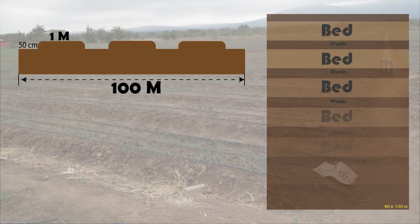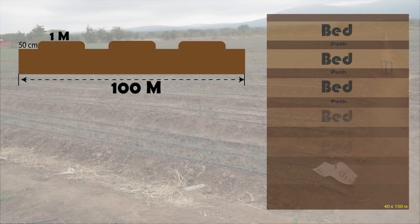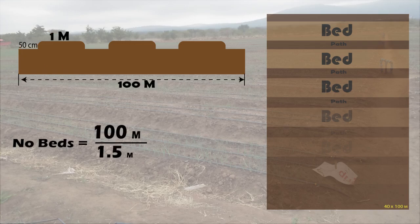The length of the whole land is 100 meters. Looking at this pattern, the only unit repeating throughout is a path and a bed. A bed is 1 meter and a path is 50 centimeters, so both together have a length of 1.5 meters. These two make the basic unit that repeats through the pattern — not the bed alone or the path alone, but both. With a total length of 100 meters, I divide by a single unit of 1.5 meters to get approximately 66 complete units, which is 66 beds. Just an estimate.